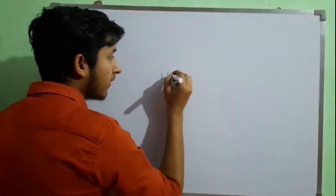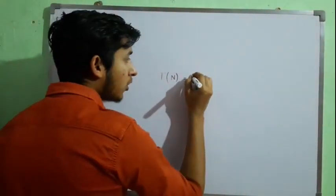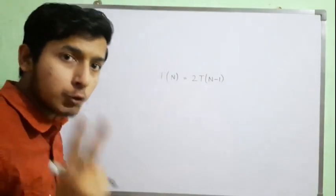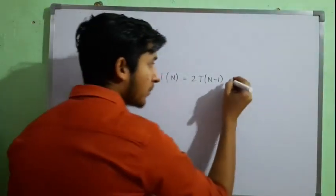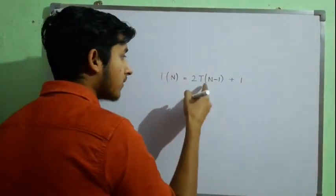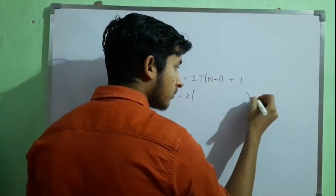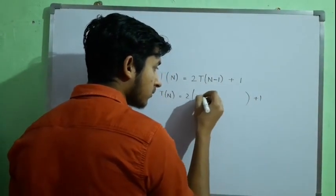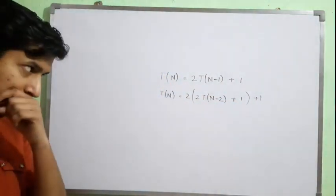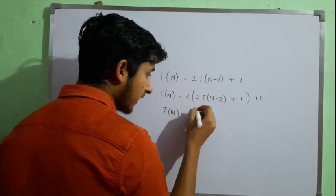For Tower of Hanoi with n disks, the complexity is twice the complexity of Tower of Hanoi of size n-1, because we call two Tower of Hanoi instances with n-1 disks, plus one for the print statement. So T(n) = 2·T(n-1) + 1. We can expand this recurrence further by splitting it step by step.